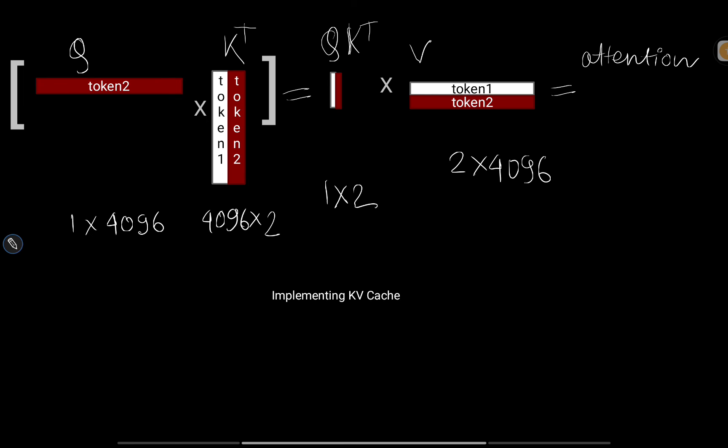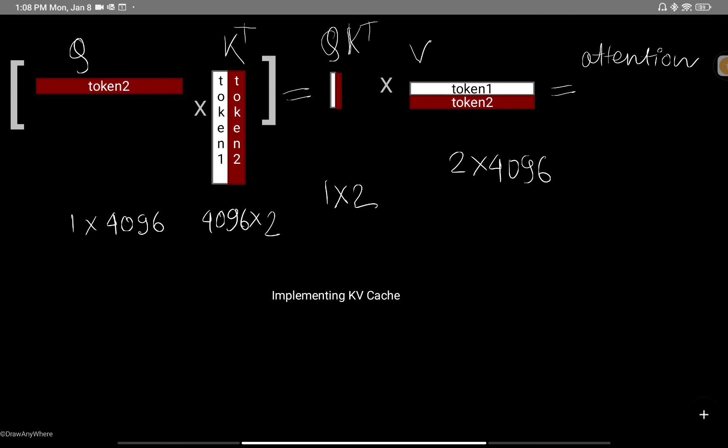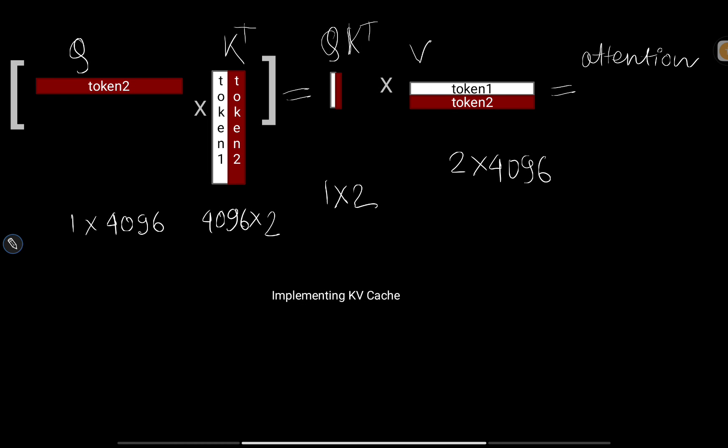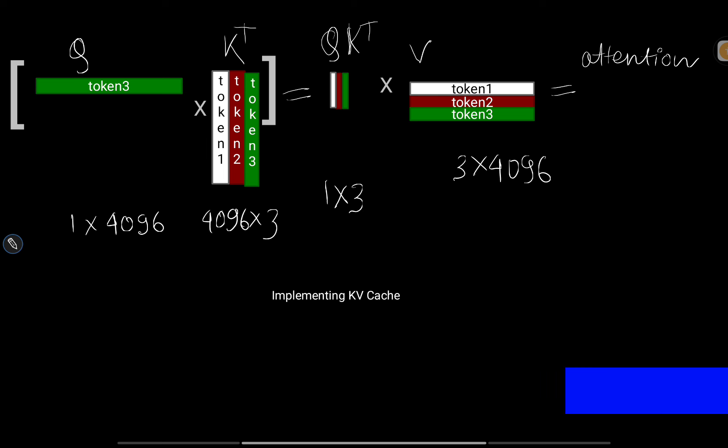In KV cache, for the second step we replace the Q matrix with only token two — we are NOT appending token one along with token two for Q. We only use token two for the Q matrix. Then we cache the values related to K and V, so both token one and token two are present in K and V — that's why it's called KV cache. We preserve these two tokens in K and V, and only use the new token in Q. The matrix multiplication then produces only output token two at the second step.